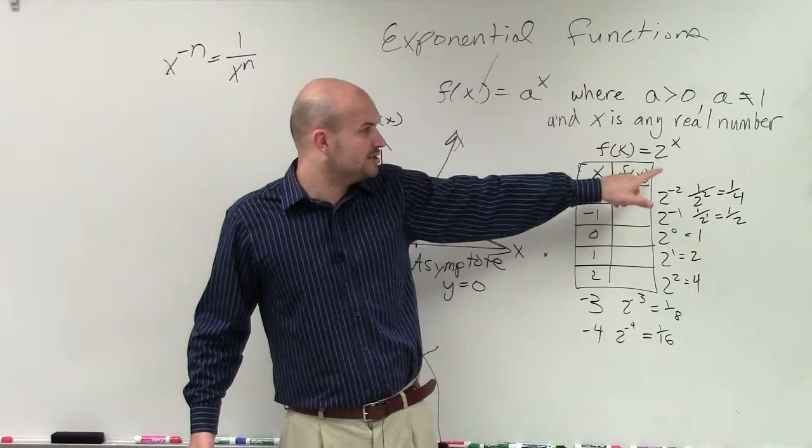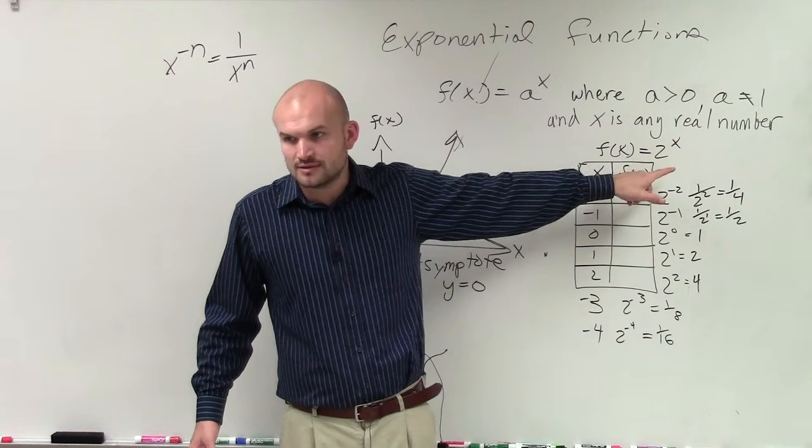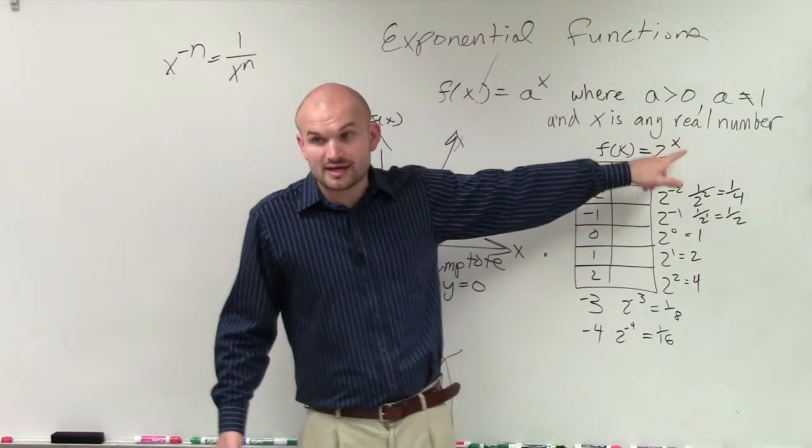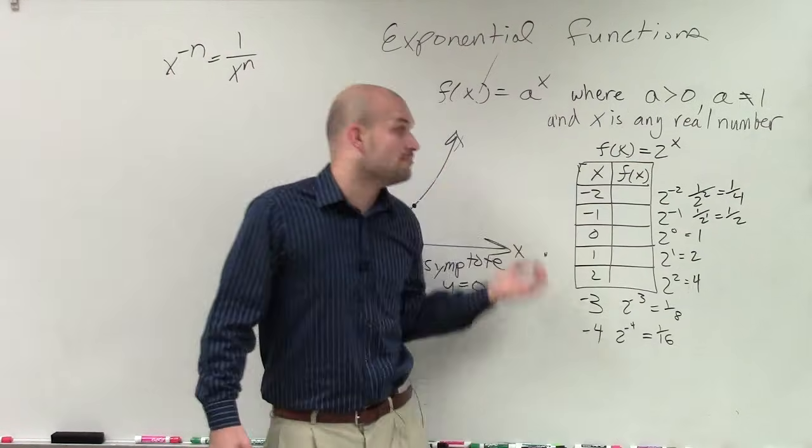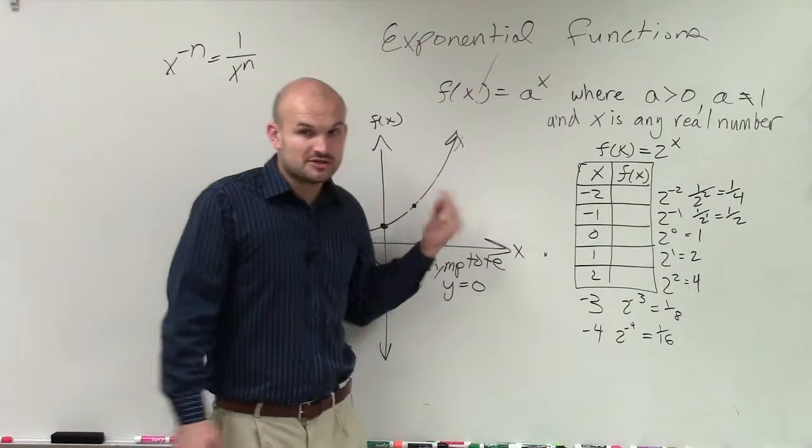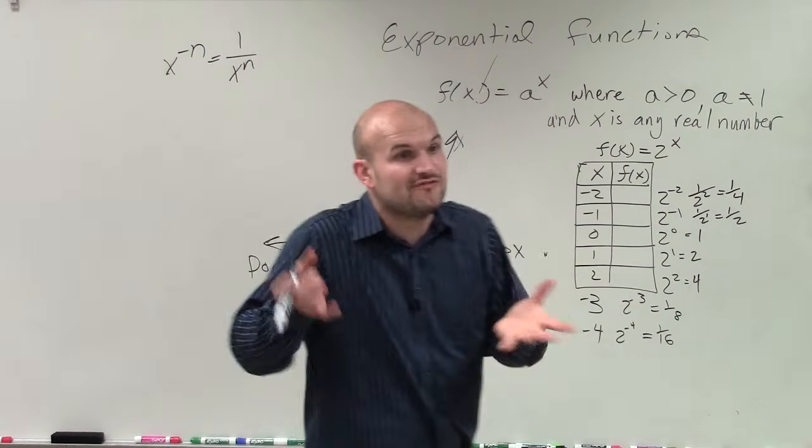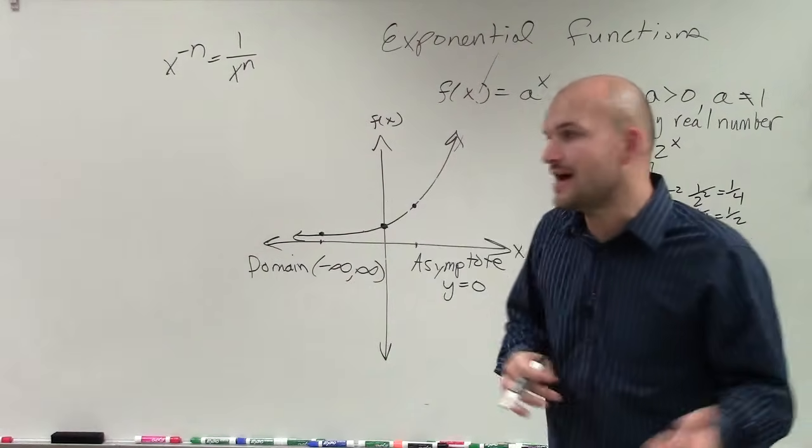But think about any real number. Can you put in 2^(99 million)? Yeah. Can you put 2^(-1 million)? Yeah, there's every number you can plug in for x, right? So the domain is all real numbers. You can plug in any number you want to between negative infinity and infinity, and you will get one single output value.